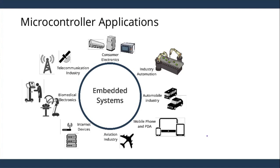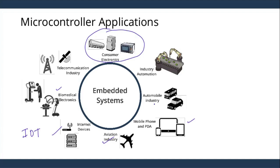What are microcontroller applications? If you see all the applications in your daily life, most things use them. Consumer electronics — microwave ovens, fridges, and ACs. Industries, your car — which has more than 60 to 65 microprocessors and microcontrollers — mobile phones, aviation industries, biomedical electronics, internet devices, and the Internet of Things, which will have a microcontroller inside it. A typical Indian home will have more than 50 to 60 microcontrollers at the present time. With this, we will stop this topic about the difference between microprocessor and microcontroller. Happy learning. Thank you.